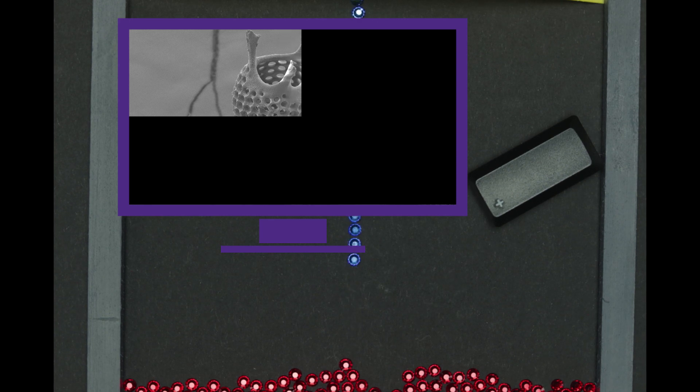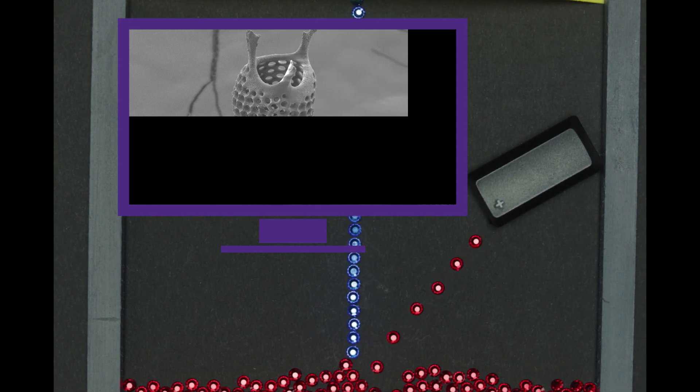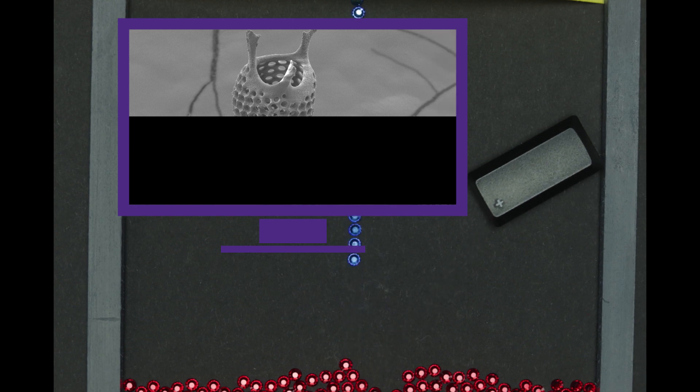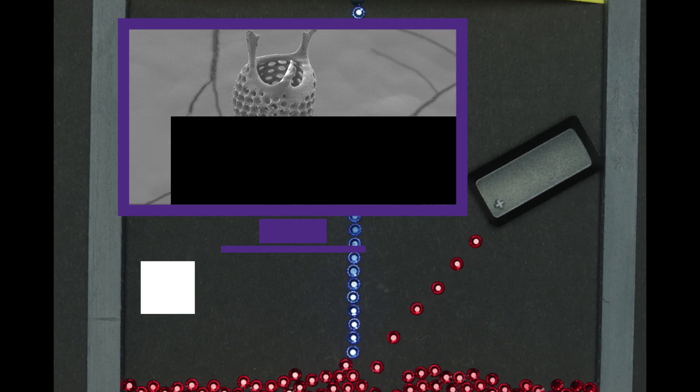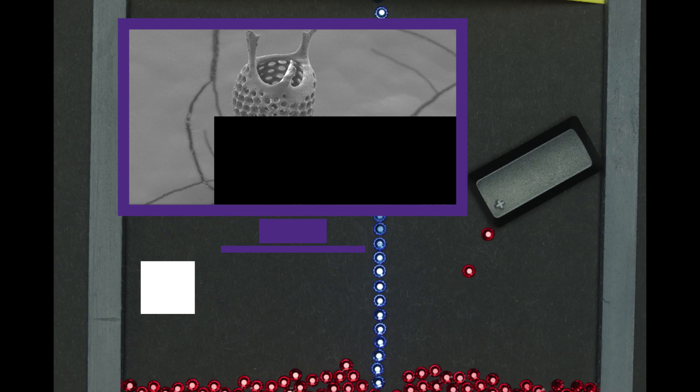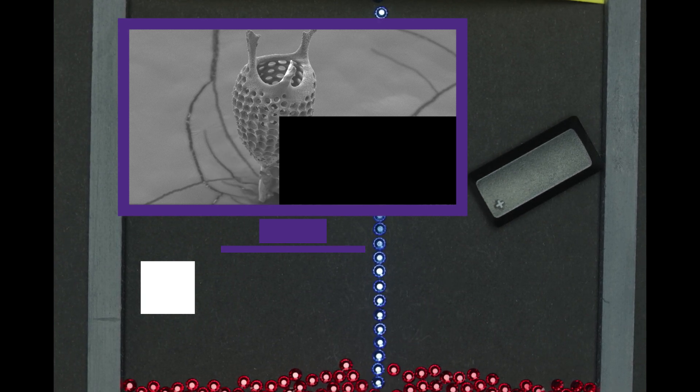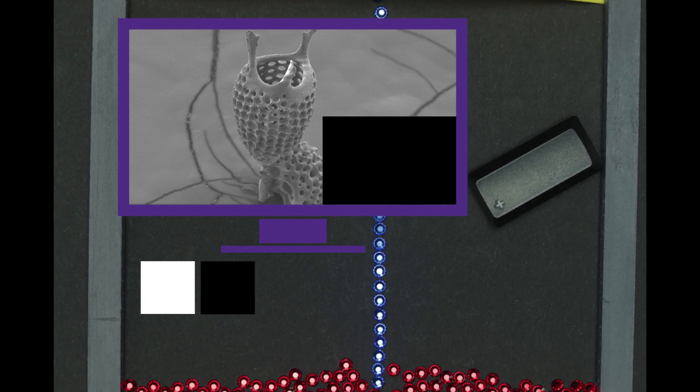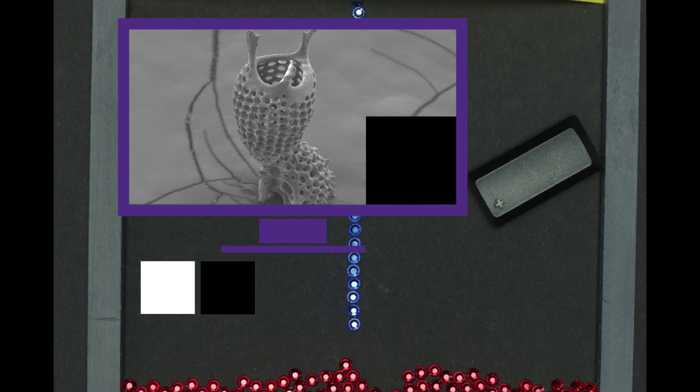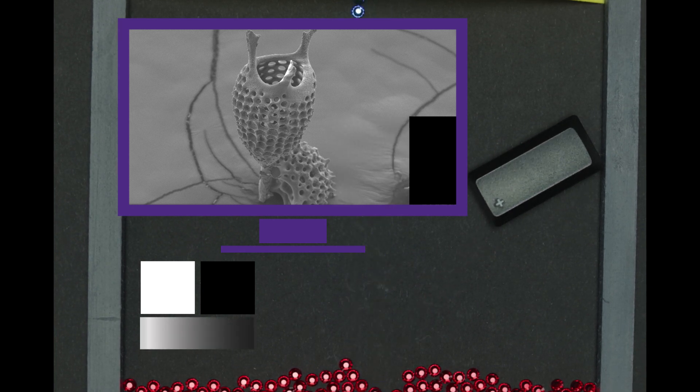When the electron beam hits the surface of your sample many secondary electrons are released. The computer interprets this as a white point. When the electron beam hits the bottom of a pit few secondary electrons are released. The computer interprets this as a black pixel. From there anywhere in between you will get different shades of gray represented in the pixels.